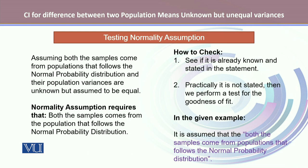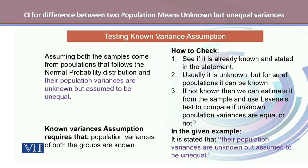Secondly, we want to test whether both samples come from populations that follow the normal probability distribution. If it's not already stated, we would perform a goodness-of-fit test. In this example, we are assuming that both samples come from populations that follow the normal probability distribution, which is already stated in the problem. Hence, this assumption is also verified and we don't have to check it further using the goodness-of-fit test.